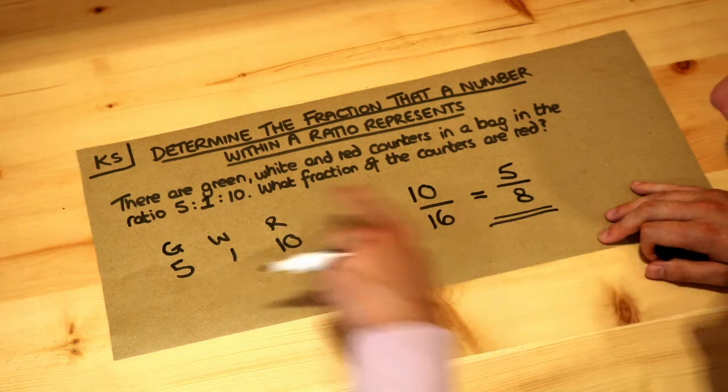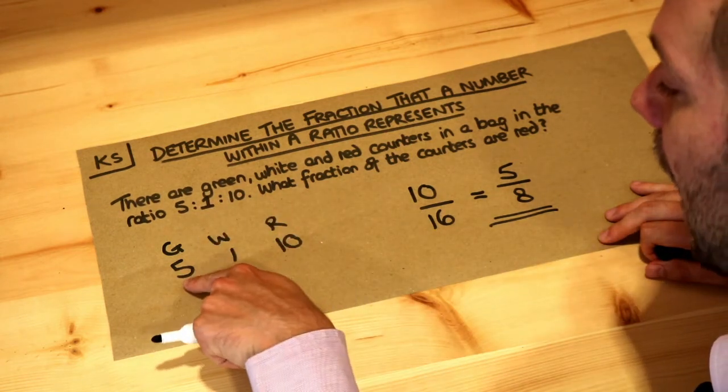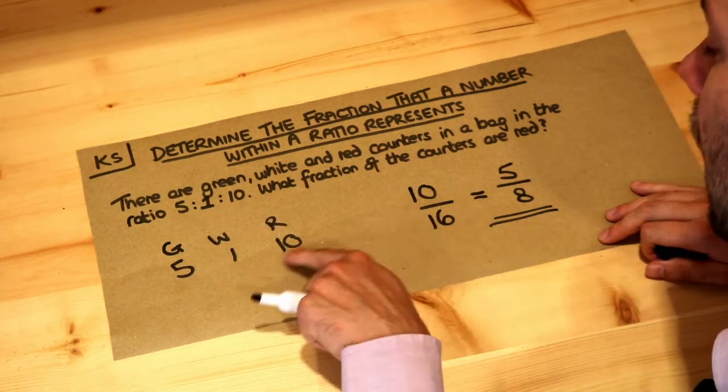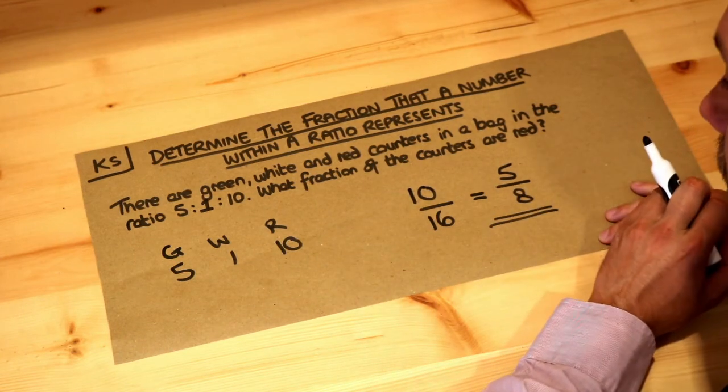So just treat the numbers in your ratio as if they were the actual quantities you have of each, and then work out the fraction from there.